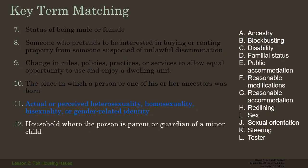Number eleven: the actual or perceived heterosexuality, homosexuality, bisexuality, or gender-related identity — that would be sexual orientation. That's a little different than sex. Sexual orientation primarily was put in there to protect homosexuals and bisexuals when that became an issue maybe in the 1970s or 1980s. Sexual orientation doesn't really have to do with your sex as such — whether you're male or female — it's who you're attracted to.